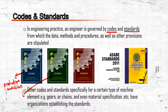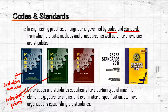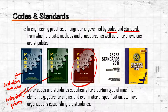Volume Two covers post-production or processing equipment, such as milling equipment, threshers, and dryers.